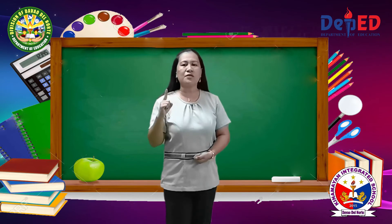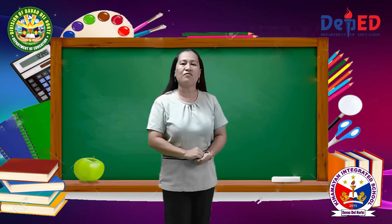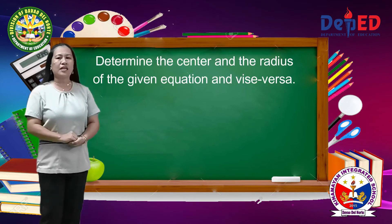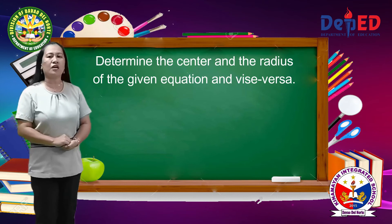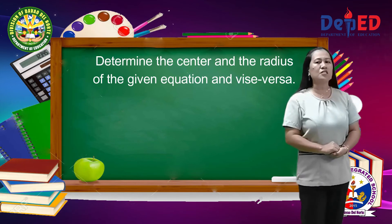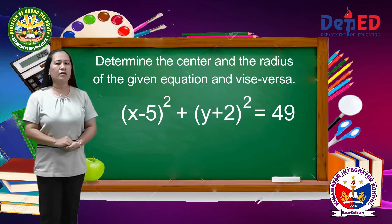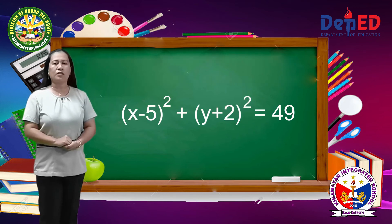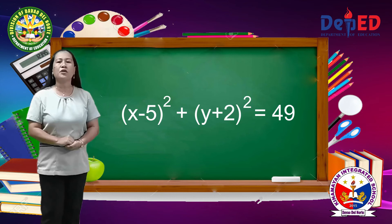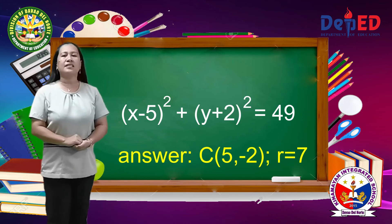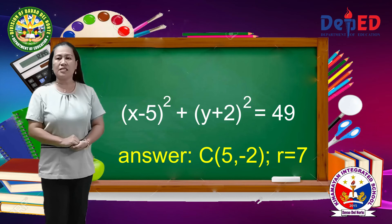Remember to equate to 0 when finding the value of h and k. Now let us try your understanding. Determine the center and the radius of the given equation and vice versa. I will give you 5 seconds to answer each number. Number 1: quantity x minus 5 squared plus quantity y plus 2 squared equals 49. The center is (5, negative 2) and the radius is 7.